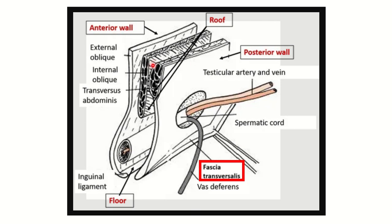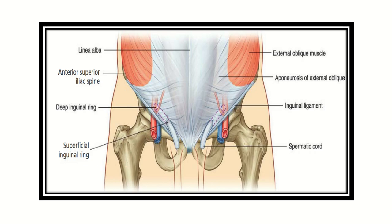The roof of the inguinal canal is formed by the internal oblique and transversus abdominis muscle. To summarize: the anterior wall is mainly formed by the external oblique muscle, the posterior wall is mainly formed by the fascia transversalis, the roof by the internal oblique and transversus abdominis, and the floor by the inguinal ligament.